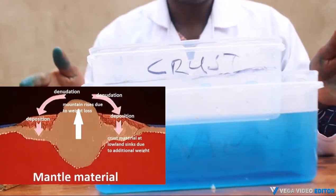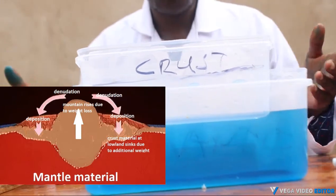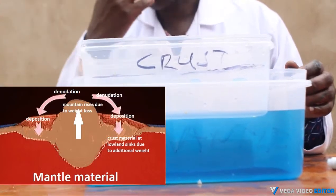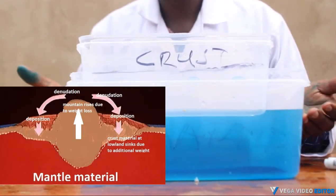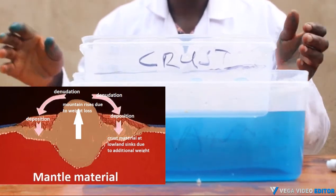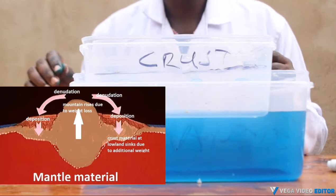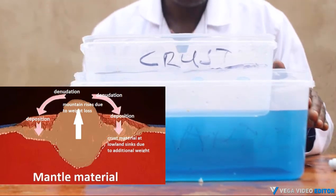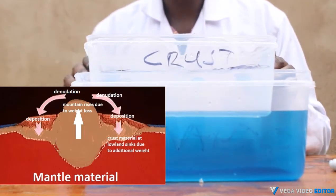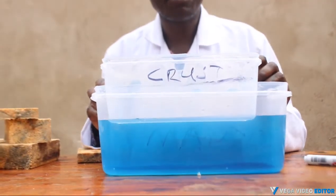From this concept, we can conclude that mountains will remain mountains and lowland will remain lowland. Why? Because when erosion occurs on a mountain, reduction of weight occurs and the crust rises to find equilibrium. And when deposition occurs on lowland, addition of weight occurs, so the crust falls to find equilibrium. So the upward and downward movement of the crust is called isostatic adjustment. Thank you for watching. Don't forget to subscribe to our channel.